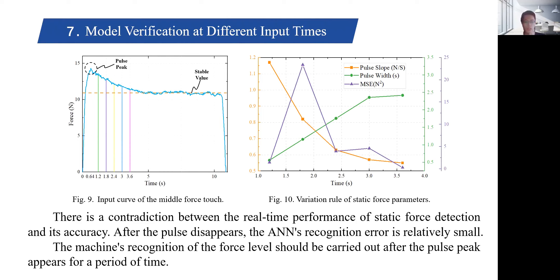In the pulse duration, the ANN's recognition errors are 1.99 N and 2.15 N, and the relative errors are 17.72% and 19.12%. After the pulse disappears, the ANN's recognition error is 0.54 N and the relative error is 4.84%. Therefore, to make the static force detection more accurate, the machine's recognition of the force level should be carried out after the pulse peak appears for a period of time.